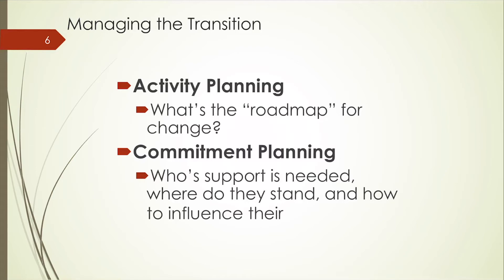Now managing the transition. We have our stakeholders in place and they're out influencing — but what's next? What plan do you have for this department, organization, or ministry? You need to provide a roadmap. Activity planning is gathering together the attainment part — we need to do this, this, this, and this at these intervals or during these timeframes, so that the initiative or plan is in action. Then commitment planning — whose support is needed, where do they stand, and how to influence them. Getting people to align and getting a commitment out of them is going to be necessary.